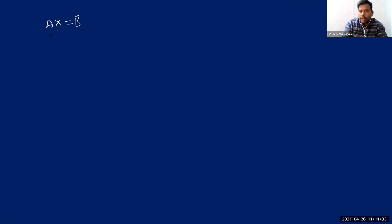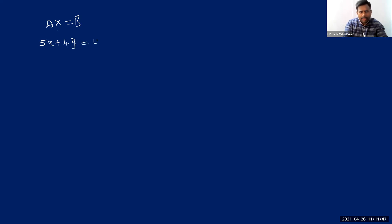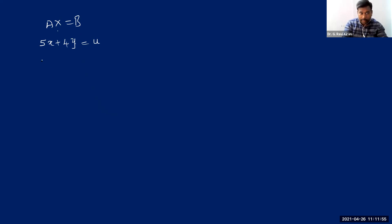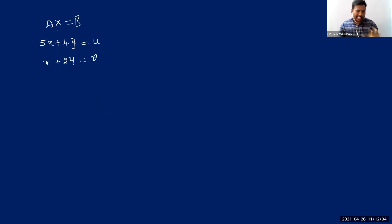I'm using a similar notation here. Let me take a simple system of equations: 5x plus 4y equals u, and the second equation x plus 2y equals v. I'm not taking a particular constant on the right-hand side but using u and v for convenience — you'll understand why.